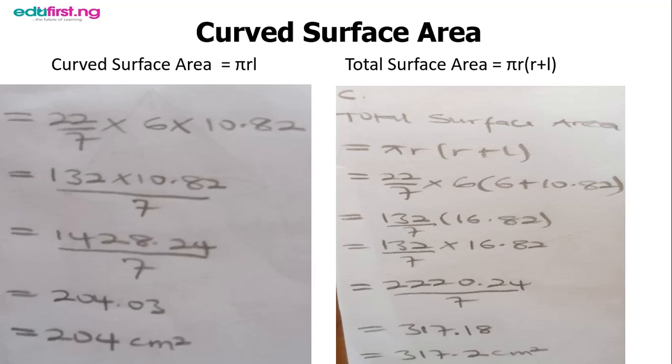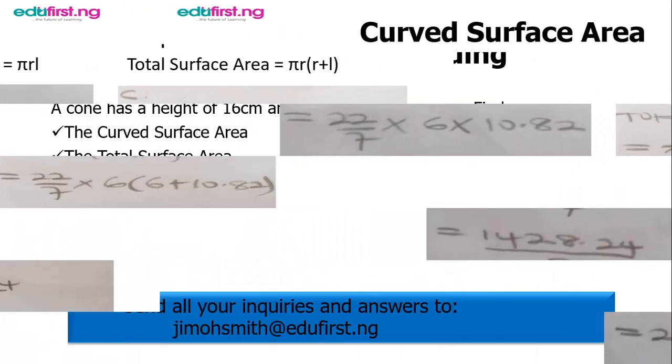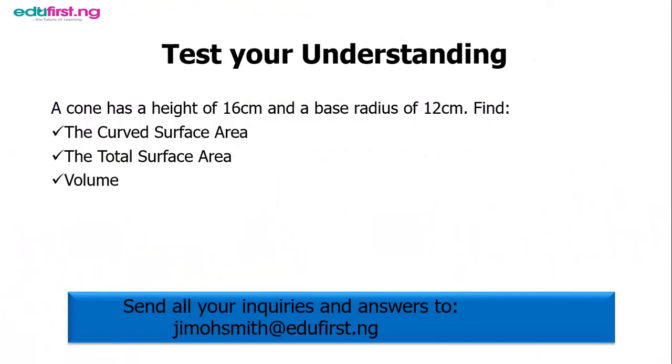Now I know we have learned a lot today, so I am going to give us only one question to try and test our understanding. A cone has a height of 16 centimeters and a base radius of 12 centimeters.